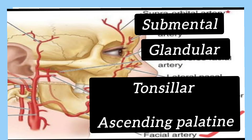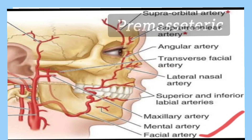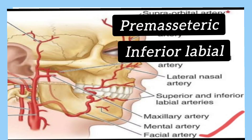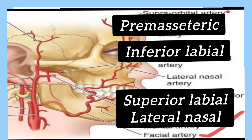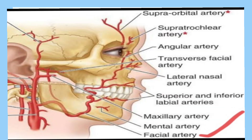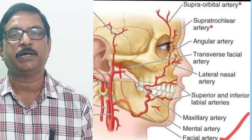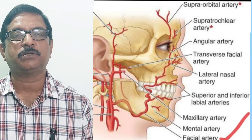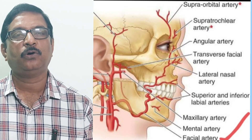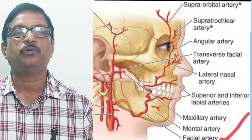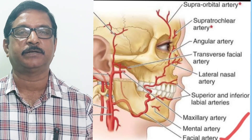In the face it also gives four branches: the pre-masseteric branch, then inferior labial, then superior labial, and lateral nasal. On its course the artery is tortuous. The question may arise whether this artery is tortuous only in the neck, or only in the face, or whether it is tortuous throughout its extent. The answer is: this artery is tortuous throughout its extent.